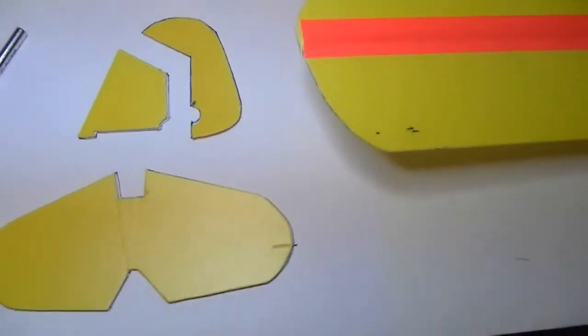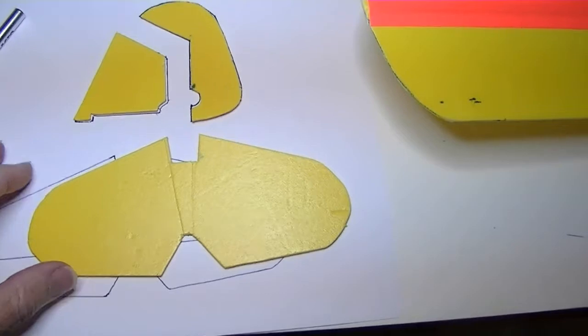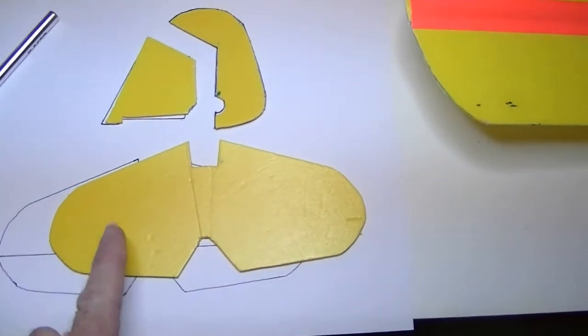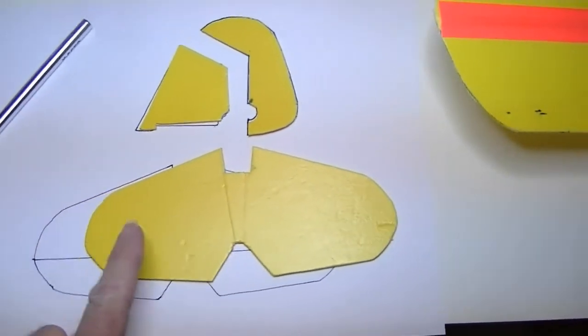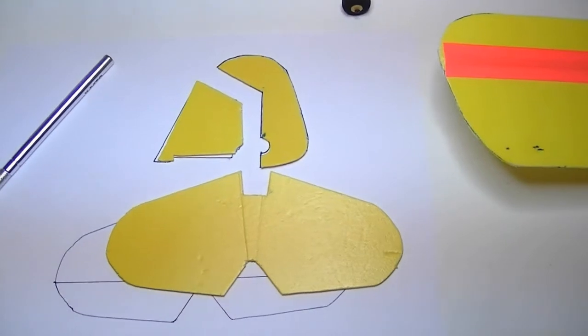I've cut out the sections for the horizontal stabilizer and the vertical stabilizer. I haven't cut out the line across here for the elevator yet, but I'm going to do that and then glue this all onto the plane.